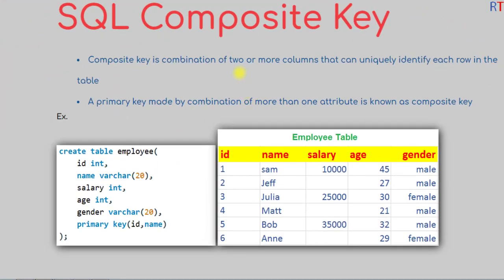Hey, what's up guys. In this video we're going to talk about composite keys in Structured Query Language. A composite key is the combination of two or more columns that can uniquely identify each row in the table.